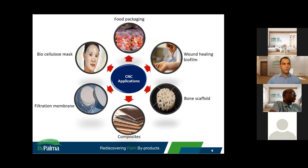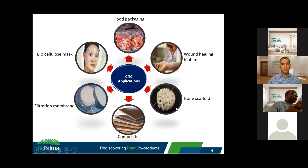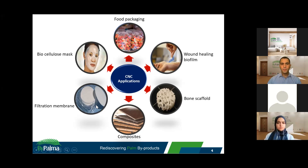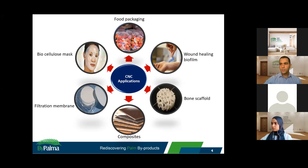Here are some of the potential applications of CNC. It is used as food packaging, and in the biomedical field it can be used as a wound healing biofilm. This is the bone scaffold, used for patients who suffer from bone injuries. CNC is usually used as a reinforcing material in composites for structural buildings and automotive applications. There are also applications as a filtration membrane to treat wastewater, and some commercialized products use cellulose nanocrystals as a biocellulose mask for health and beauty concerns.